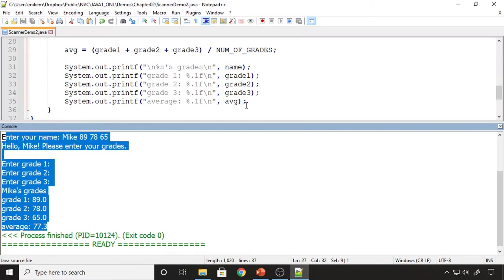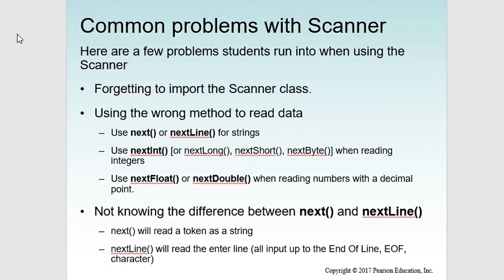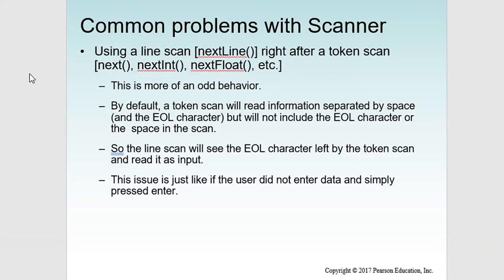You need to be careful with this behavior — it's just something students should know. You could prompt the user to enter all three grades separated by spaces, or prompt them individually. Here are common problems students run into with the Scanner: forgetting to import the Scanner class; using the wrong method to read data — next and nextLine are for strings, nextInt/nextLong/nextShort/nextByte for integers, nextFloat/nextDouble for decimal numbers. Note the key difference: next reads a token as a string while nextLine reads the entire line. There is another issue that occurs when you do a line scan right after a token scan — an odd behavior that trips up students.